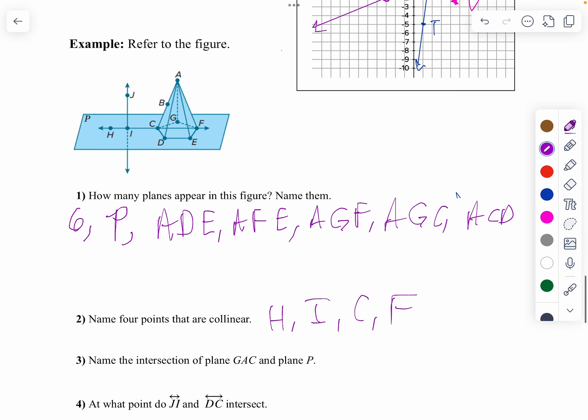Name the intersection of G, A, C, and plane P. So I want the line that's on the bottom here. So that would be line G, C. Remember, two planes intersect in a line. Don't tell me they're a point. They're a line.